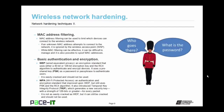Which brings us to basic authentication and encryption for wireless networks. First up is WEP, or Wired Equivalent Privacy. It's an encryption standard that uses either a 40-bit or a 128-bit encryption key in the RC4 algorithm to authenticate devices and encrypt transmissions. It uses a pre-shared key as a password or passphrase to authenticate users. WEP is easily cracked and should not be used — in fact, WEP can be cracked in minutes. Better than WEP is WPA, Wi-Fi Protected Access. It's an authentication and encryption standard that improved upon WEP, still using PSK and the RC4 algorithm, but also introduced Temporal Key Integrity Protocol, or TKIP. TKIP generates a new security key for every packet with a strength of 128 bits or greater. It's not as easily cracked as WEP, but it can still be cracked and should not be used unless absolutely necessary.